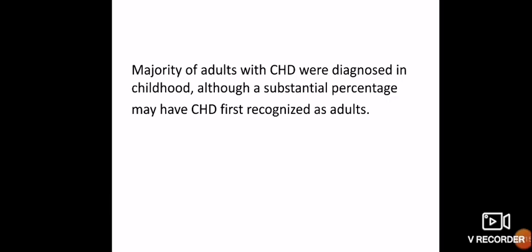Congenital heart diseases are usually seen in the pediatric age. Almost 70 to 80 percent of cases are diagnosed in the pediatric age group. Only a few conditions escape from the pediatric age because they are asymptomatic and not recognized by routine checkups at school age. In those cases only will the patient come to adult life. Otherwise, what we are seeing at present is that some surgery has been done in the pediatric age group for congenital heart diseases.